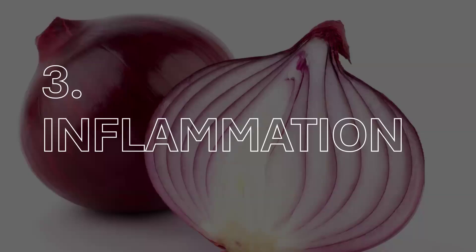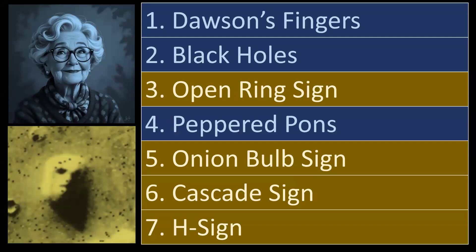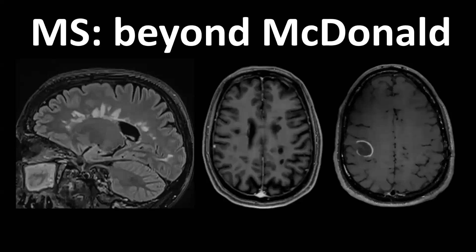Let's continue with some neuroradiological signs and mnemonics involving inflammatory and infectious diseases of the central nervous system. We're going to look at some very typical imaging findings that should make you think multiple sclerosis. The title of this slide is called 'Beyond McDonald' — we know the McDonald criteria and use them in each and every patient suspected of having multiple sclerosis.